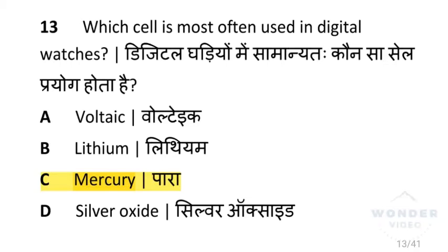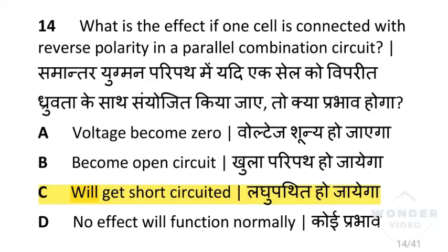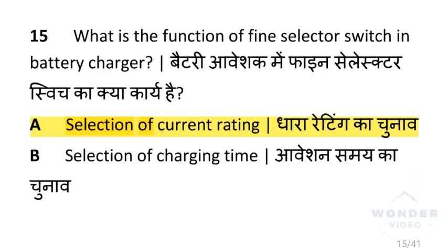Which cell is most often used in digital watches? That is the mercury cell. What is the effect if one cell is connected with reverse polarity in a parallel combination circuit? That cell will get short circuited. What is the function of the fine selector switch in a battery charger? That is the selection of current rating.